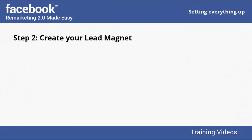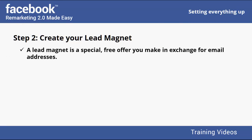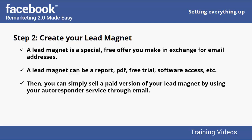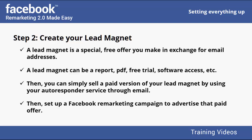Step 2: Create your Lead Magnet. A Lead Magnet is a special free offer you make in exchange for email addresses. With an attractive Lead Magnet, you'll accelerate your email list building. It can be a report, PDF, free trials, or software access. You can build a list by offering free stuff, then sell a paid version through your Autoresponder, and set up a Facebook remarketing campaign to advertise that paid offer to increase buyer propensity.